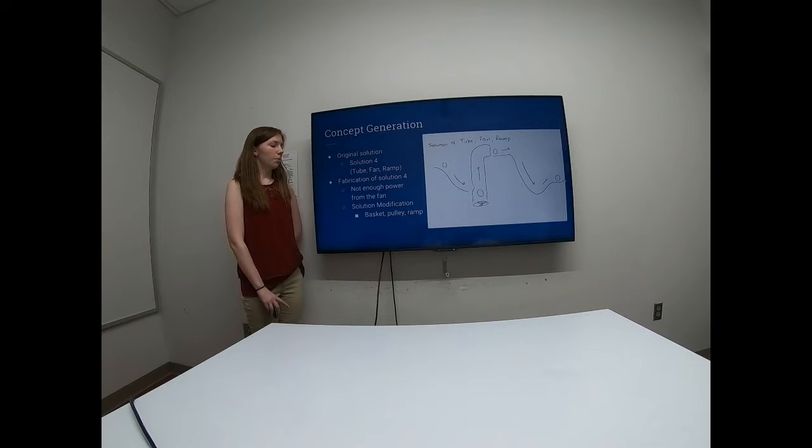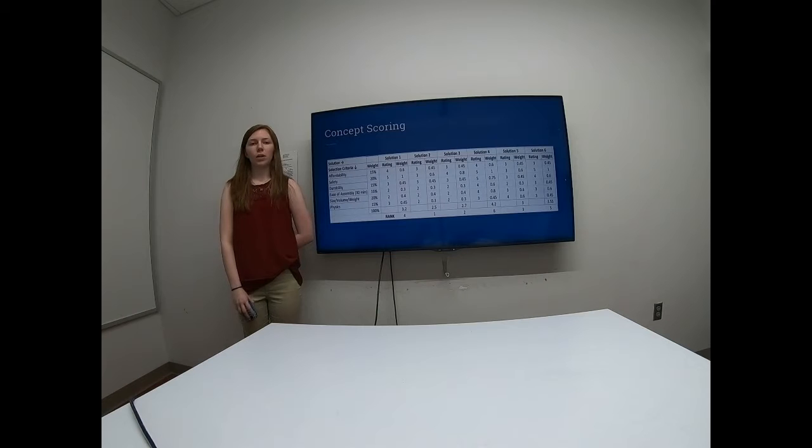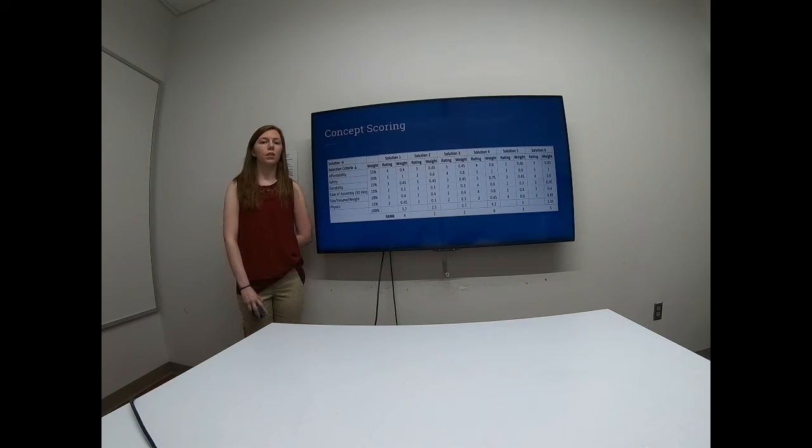And this solution was composed of a basket, pulley, and a ramp. We came to this solution because after analyzing our concept scoring chart from the original six solutions we generated, Solution 1 included a pulley in it and was very high-ranking compared to Solution 4, which was the original solution we had chosen. We felt that the pulley aspect from Solution 1 in conjunction with the ramps from Solution 4 would be another feasible solution for our project and work well.